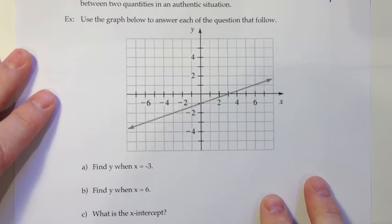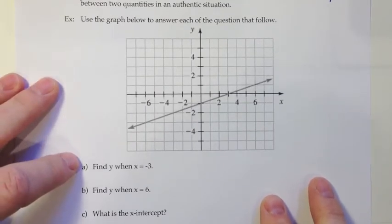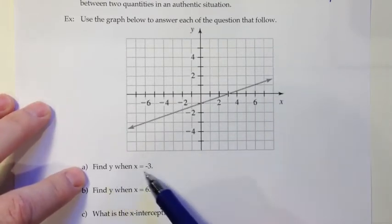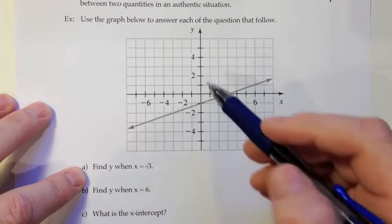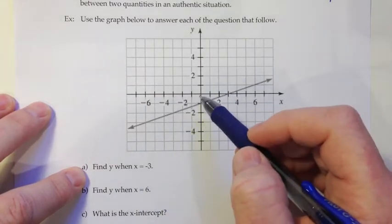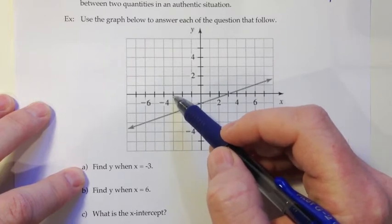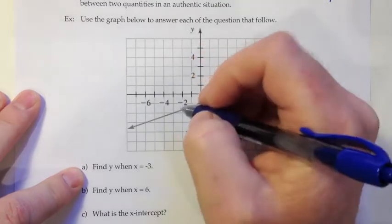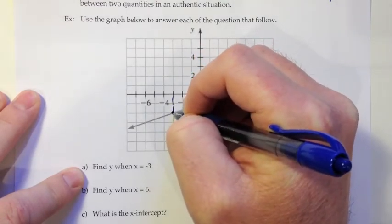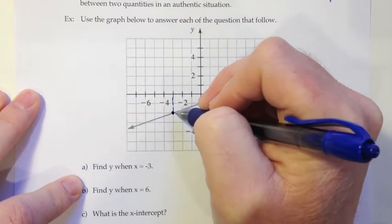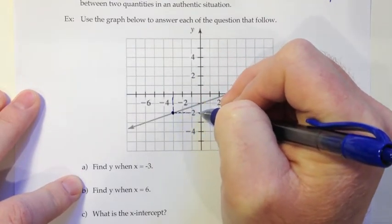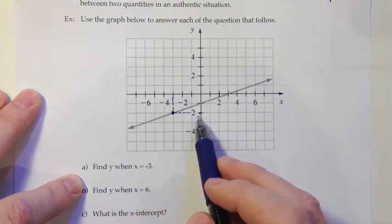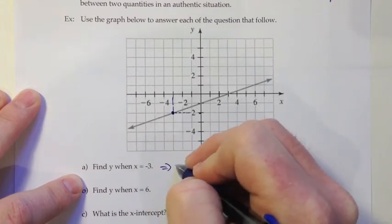Use the graph below to answer each of the questions that follow. And they've shown us a linear model or a line here. And they want to know what is the y value when x is negative 3. So the way you find that is you go on your x-axis and you count over 1, 2, 3 to get to the negative 3 side. And then you move either straight up or straight down to hit your model. In this case that would be down. So we drop down until we hit that point. And they want to know what is the y value. So then I would go across and see how far down is that. And it looks like that's two units down. So it looks like when x is negative 3, the y value is negative 2.